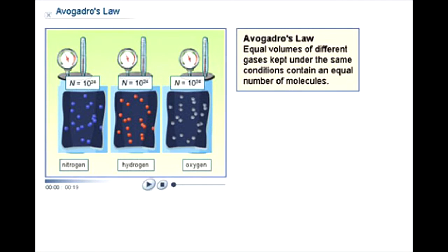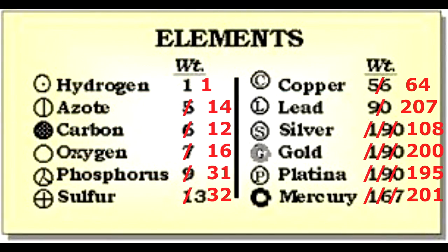That's true even given the fact that the particles are different. From left to right, we have nitrogen, hydrogen, and oxygen in the containers — yet since they take up the same volume, each container holds the same number of particles. Using this principle, chemists were able to accurately determine relative atomic masses by comparing equal volumes of different gases, and could much more accurately determine how much heavier all known elements were compared to hydrogen.